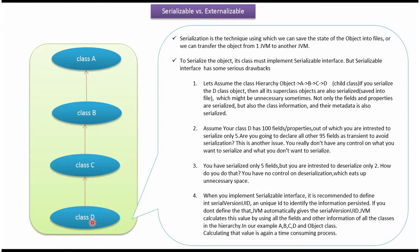Assume your class D has 100 fields or properties, out of which you want to serialize only 5 fields. Then are you going to declare the remaining 95 fields as transient to avoid serialization? This is another big issue. You really don't have any control on what you want to serialize and what you don't want to serialize.